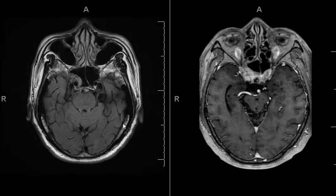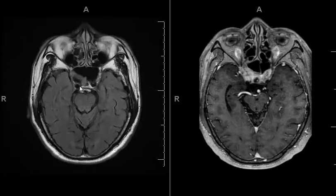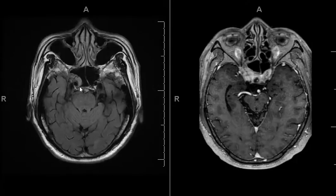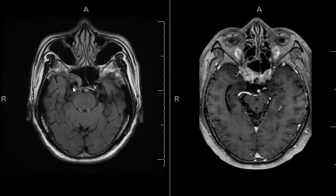This is an approximately 70-year-old male who was presenting with headache for about two months. On this axial FLAIR sequence from an MRI, you can see that there's mucoperiosteal thickening in the lateral portion of the right sphenoid sinus. Adjacent to this, you can see the cavernous internal carotid artery, the flow void here.